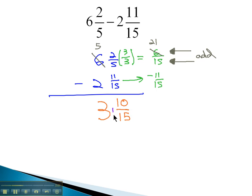Of course, we always want to reduce our fraction at the end. You'll notice 10 fifteenths, numerator and denominator are divisible by 5, which leaves us with 2 thirds. We get our final answer of 3 and 2 thirds.